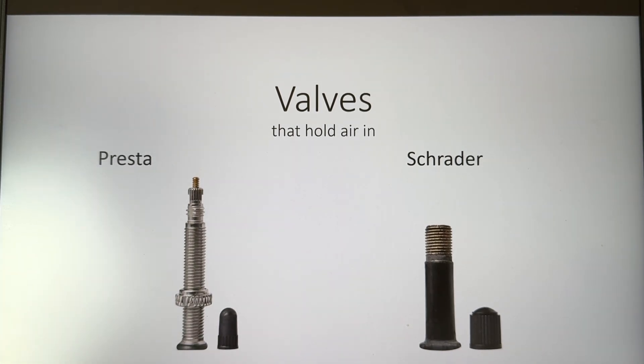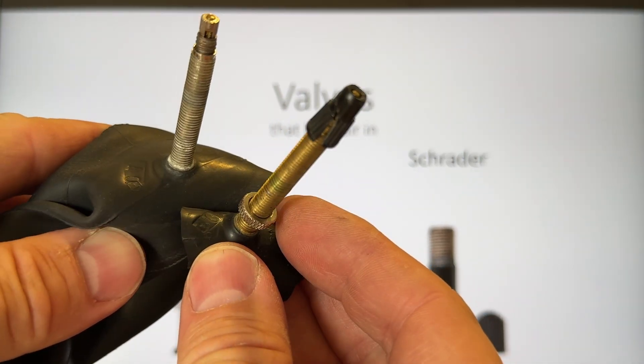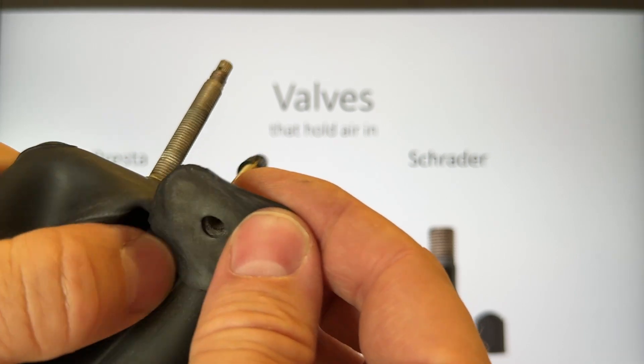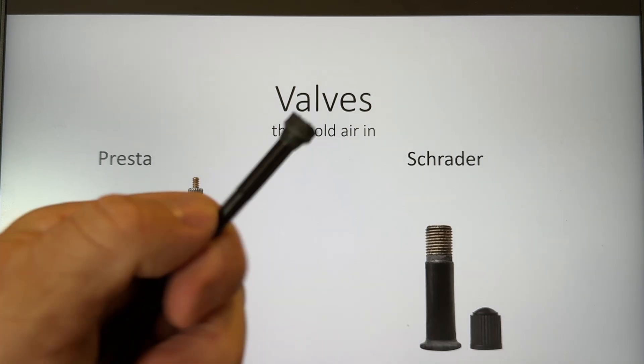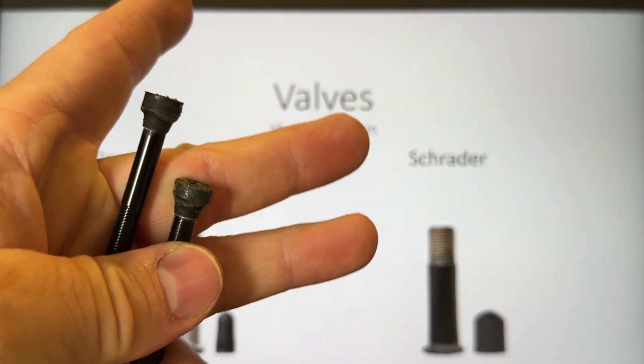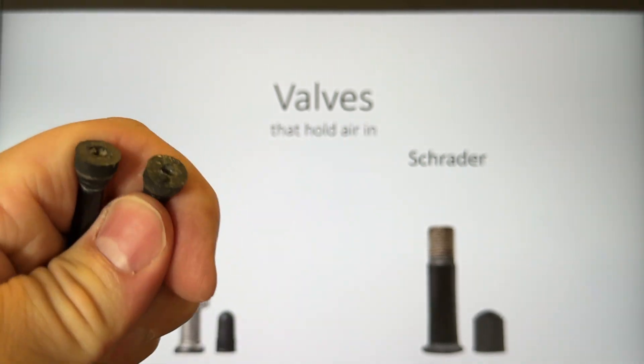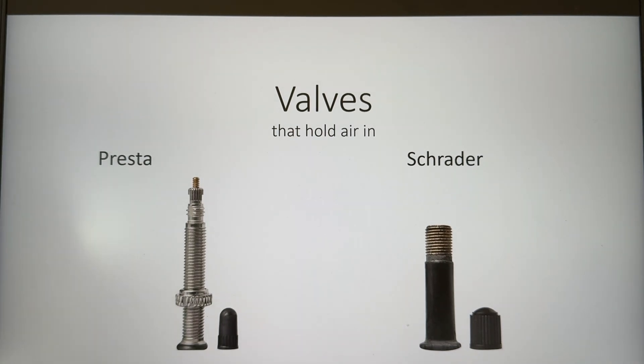And they also come in a variant that's vulcanized or mounted onto a bicycle tube. And these ones are part of a tubeless wheel system. It's a tubeless tire, it's not a valveless system, it's a tubeless system.